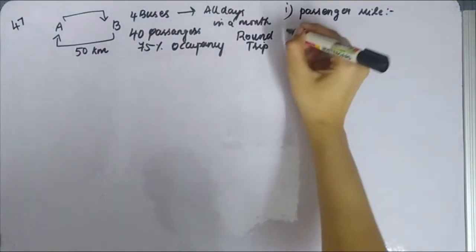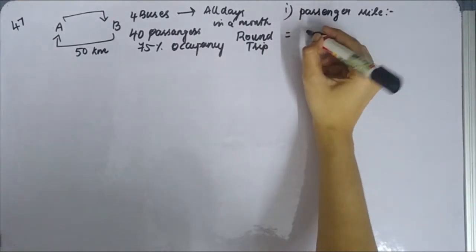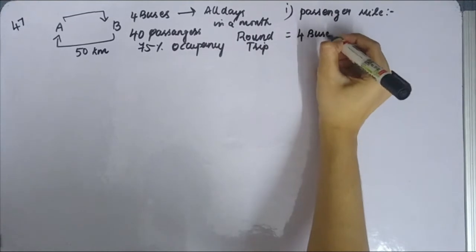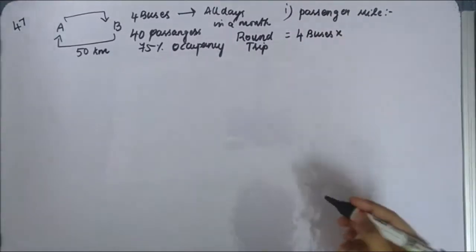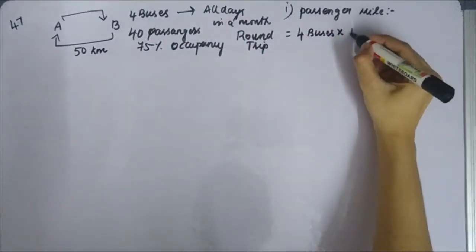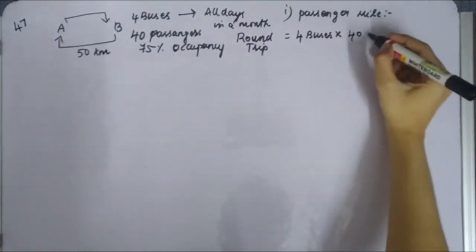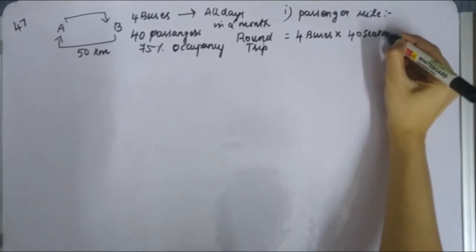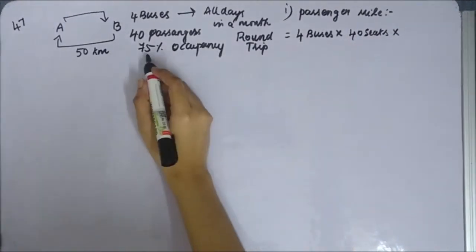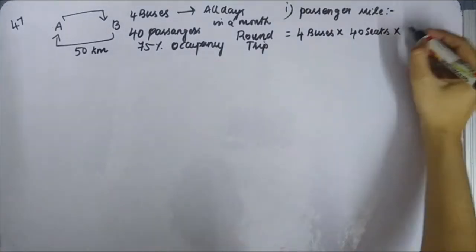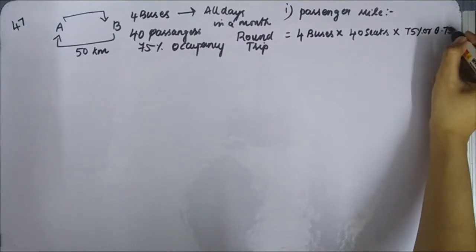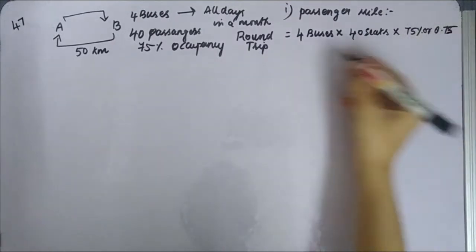The passenger miles, total number of buses. How many buses we have? Totally four buses. Four buses into seating capacity. How many seating capacity in total? 40 passengers. So 40 passenger seats. Into percentage of occupancy. How much? 75 percentage of occupancy.